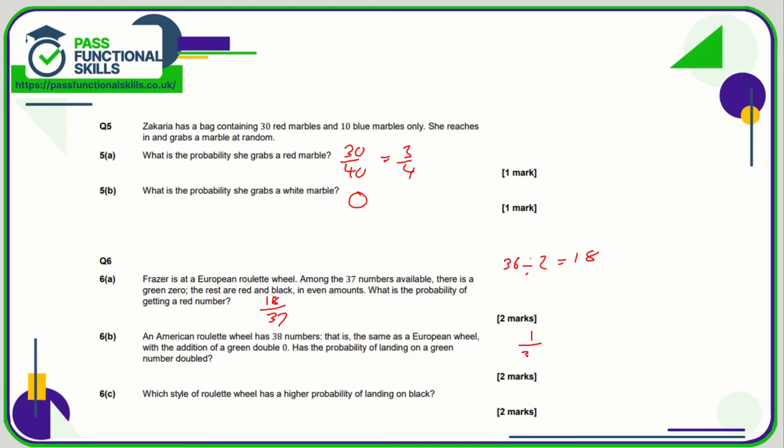Well, originally on the European it was the probability of landing on green is 1 out of 37. And the probability of landing on a green on the American one is 2 out of 38.